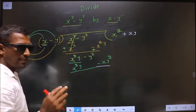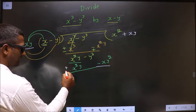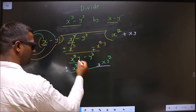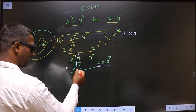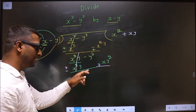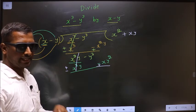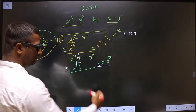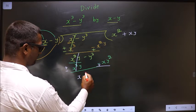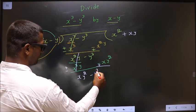Now change the signs. Here it is plus, make it minus. Here it is minus, make it plus. Now this cancels out. Again, I write in the descending powers of x — first x y square, then minus y cube.